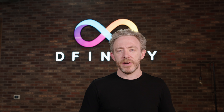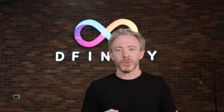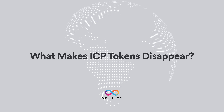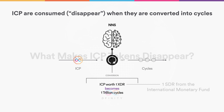Now, if the supply of ICP only grew, this would be bad for their value in the long term. So what makes ICP tokens disappear? ICP are consumed and disappear when they are converted into cycles by the network nervous system, which converts them at a floating rate such that ICP worth exactly one SDR — a logical currency unit created by the International Monetary Fund — becomes exactly one trillion cycles.